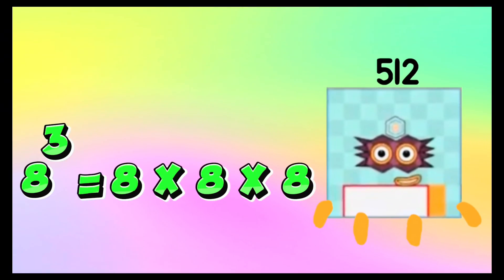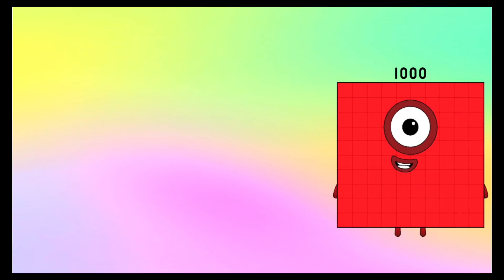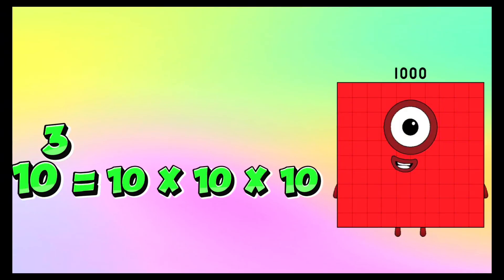Five hundred twelve: eight cube is equals to eight times eight times eight. Seven hundred twenty-nine: nine cube is equals to nine times nine times nine. And lastly, one thousand: ten cube is equals to ten times ten times ten.